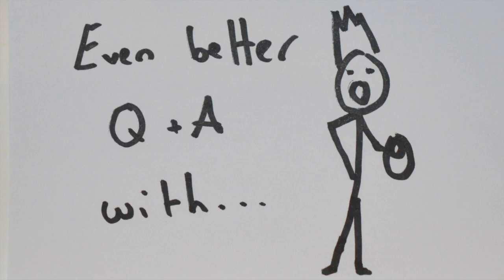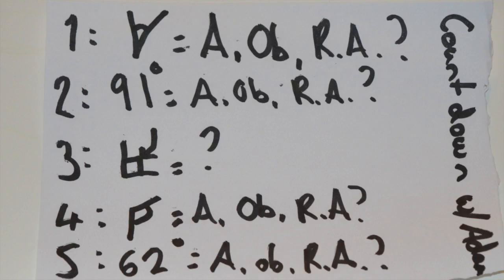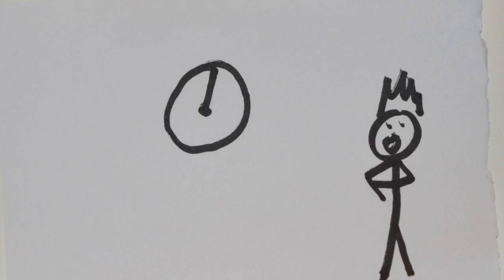So no matter what, it is always identified by the little square. No matter what. Now then, if you have been listening, which I'm sure you have, now it's time for an even better Q&A with Adam, myself. Number one, what is this angle? Acute, obtuse, or right angle? Number two, 91 degrees, would this angle be acute, obtuse, or a right angle? Number three, what is this angle? Number four, what is this angle? Is it acute, obtuse, or a right angle? Finally, number five, 62 degrees, what angle would this make? Acute, obtuse, or right angle?